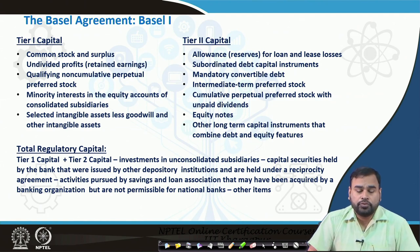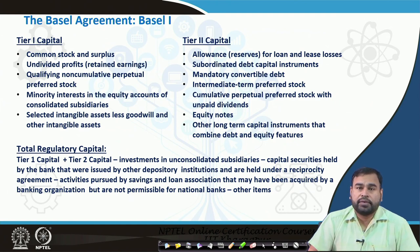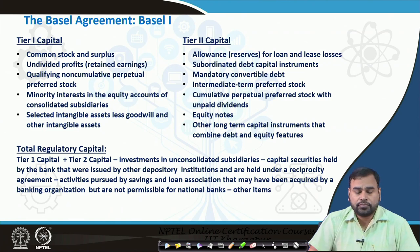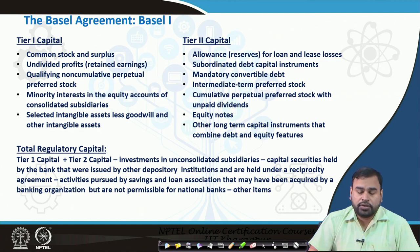Under tier 2, we have allowances for loans and leases, subordinated debt — particularly long-term debt — and mandatory convertible debt which can be converted to equity after a certain period. Then intermediate-term preferred stock — since non-cumulative stocks are part of tier 1, preferred stocks that are intermediate in nature are part of tier 2. Also included are cumulative perpetual preferred stock with unpaid dividends, equity notes, and other long-term capital instruments with either debt or equity features.